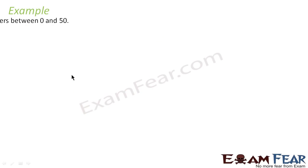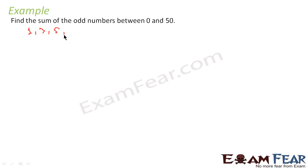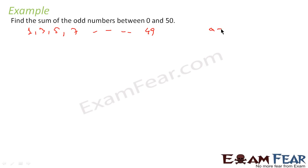Let's take another example: find the sum of odd numbers between 0 and 50. The odd numbers are 1, 3, 5, 7, ... and below 50, the maximum odd number is 49. So this is our series. For this series, A is equal to 1.